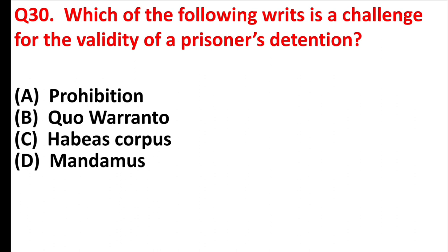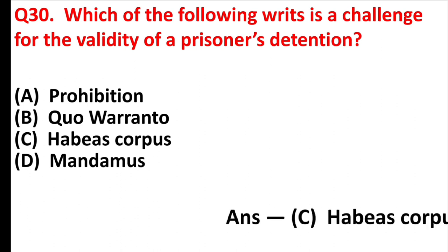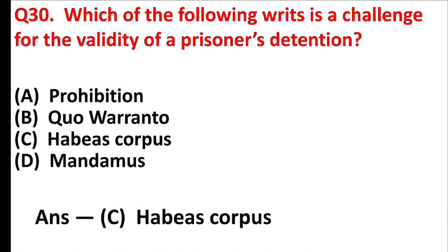Which of the following writs challenges the validity of a prisoner's detention? Answer is Option C, Habeas Corpus.